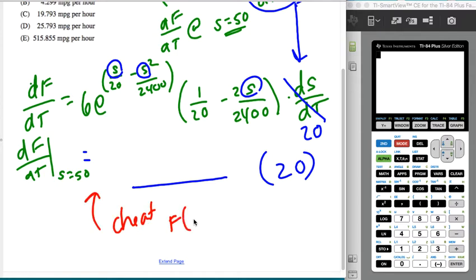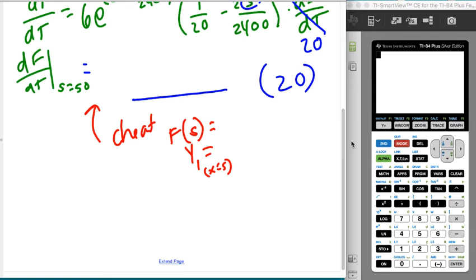You could have made F of S into your Y1. You could have typed in that whole thing in terms of X, where X is taking the place of the S. And then you could differentiate Y1 at 50.